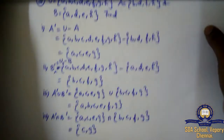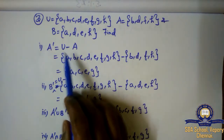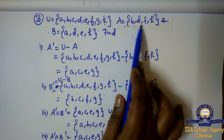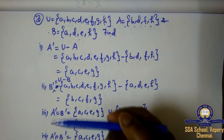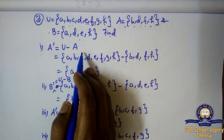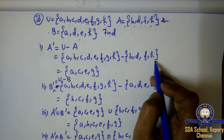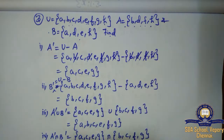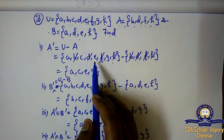Next we move on to the third set, which contains 8 subdivision questions. The question is: U is equal to {A, B, C, D, E, F, G, H}, A is equal to {B, D, F, H}, and B is equal to {A, D, E, H}. First subdivision: A dash equals U minus A. U values A, B, C, D, E, F, G, H minus A values B, D, F, H. Cancelling B, D, F, H, the pending values are A, C, E, G.